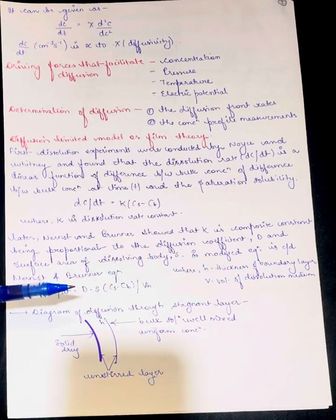The equation is dC/dt equals (DS/Vh) times (Cs - Cb), where H is the thickness of boundary layer and V is the volume of dissolution medium.